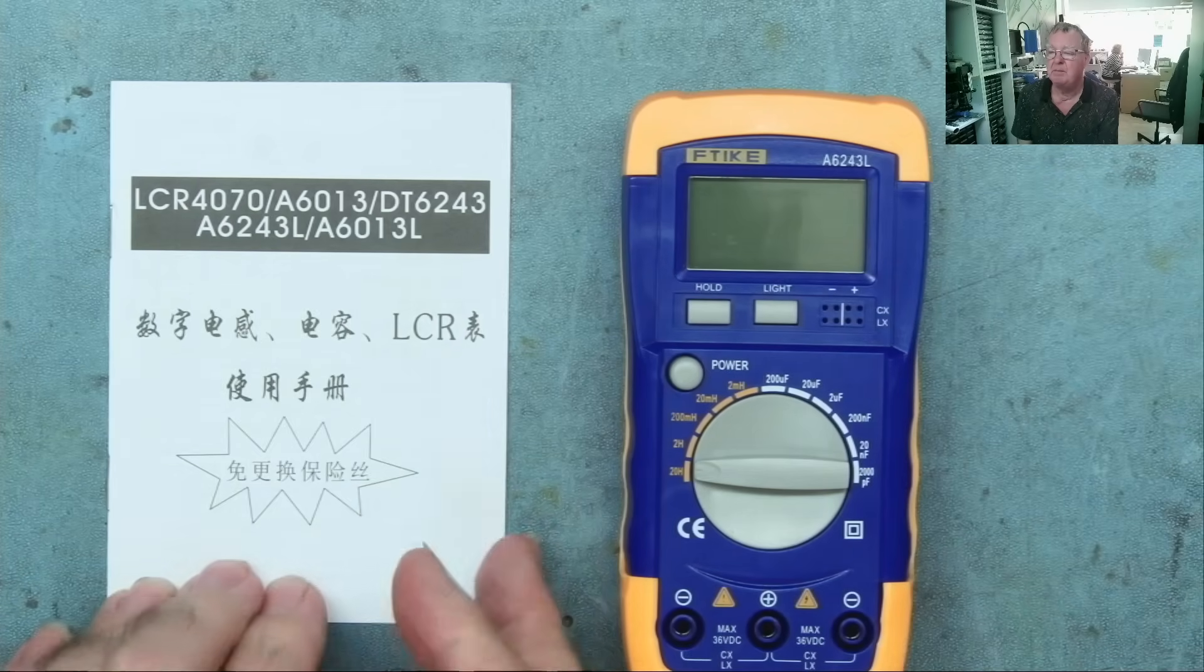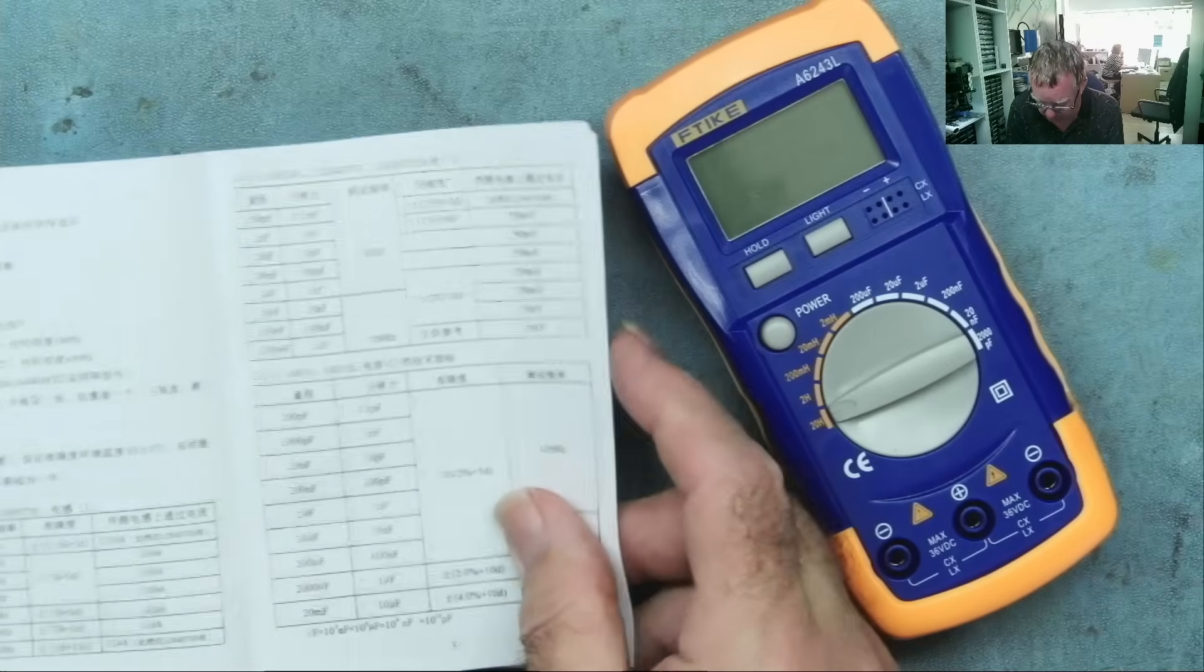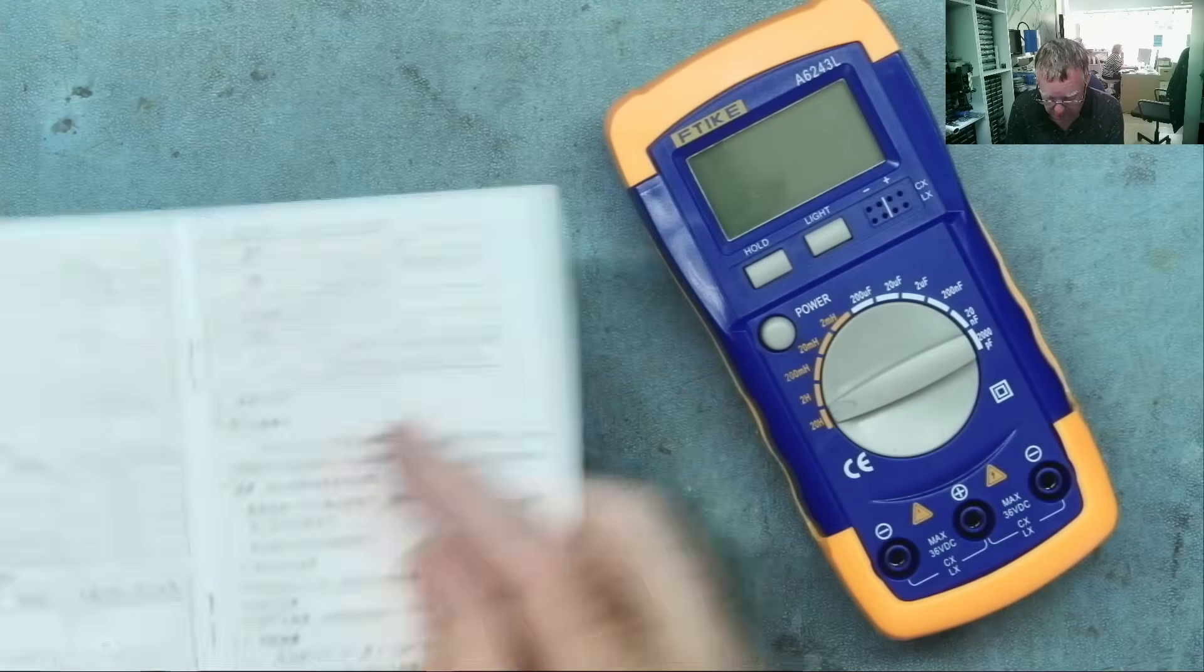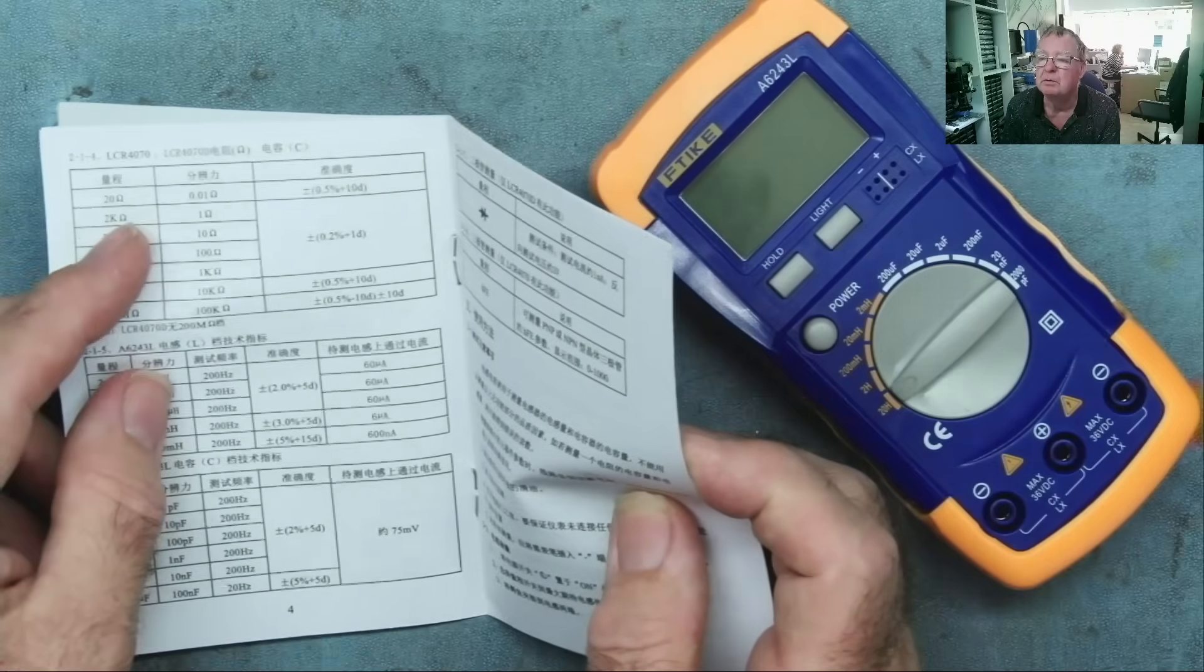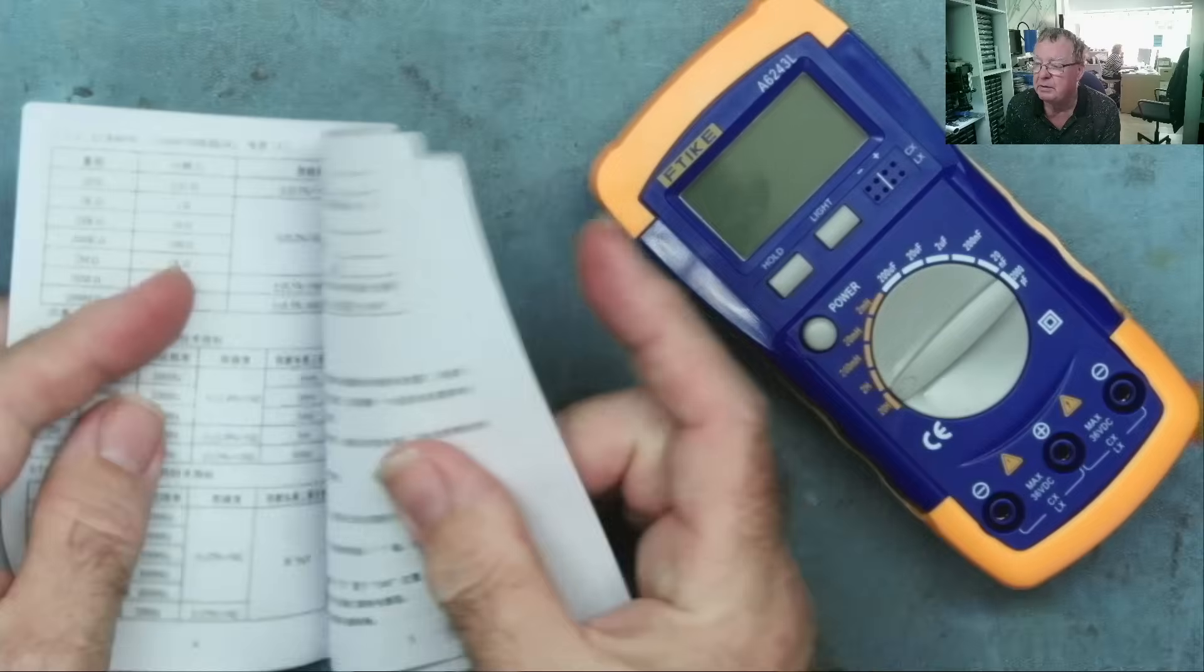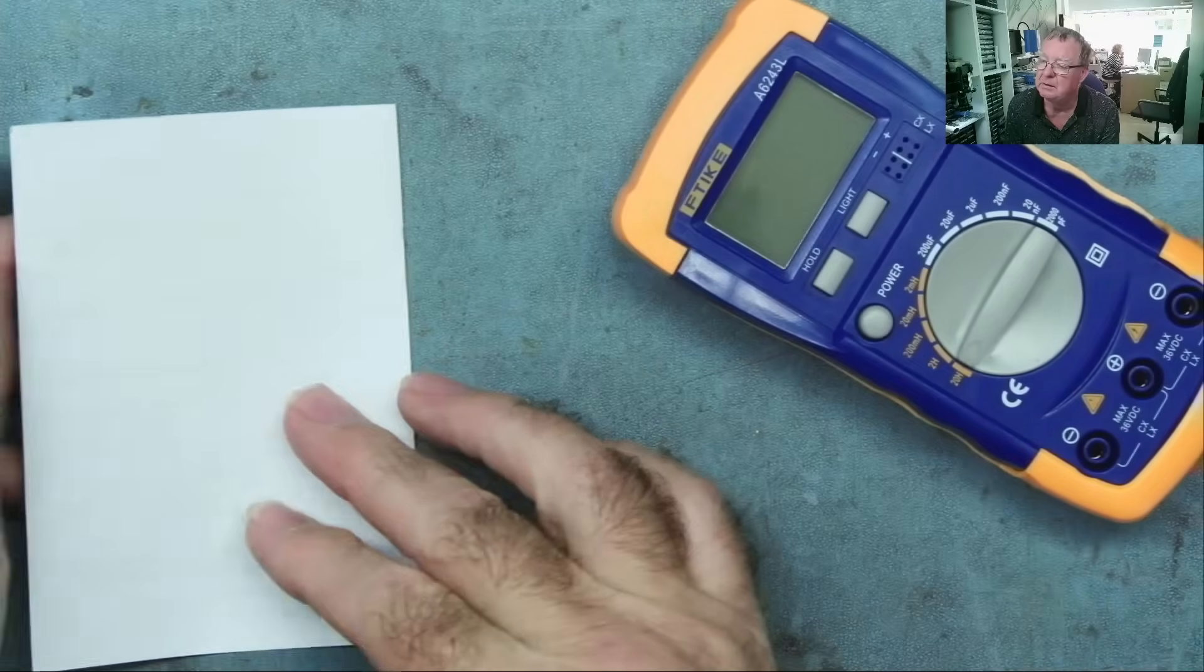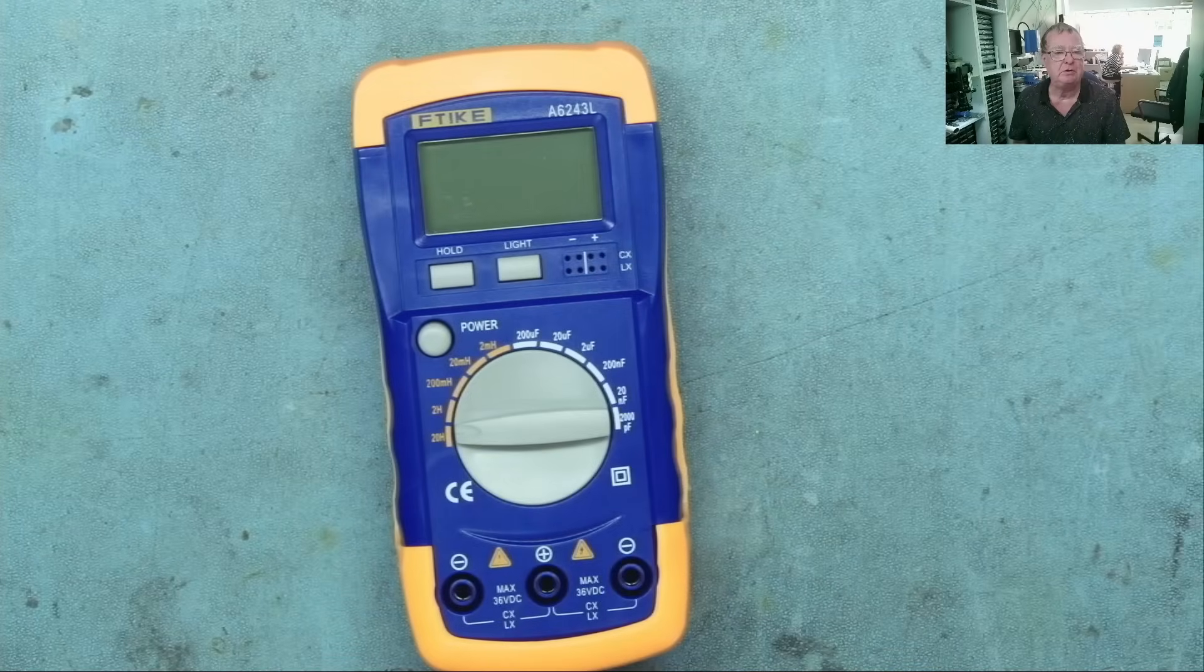It looks like this manual's for a few different versions. Like on some of the models you have resistance as well. I don't think we need to worry too much about the manual. This thing should be fairly intuitive. It's a meter, let's see what it does.